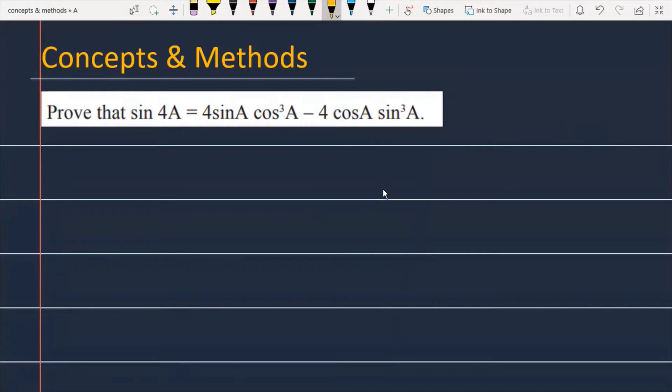Prove that sin 4A is equal to 4 sin A into cos cube A minus 4 cos A into sin cube A.